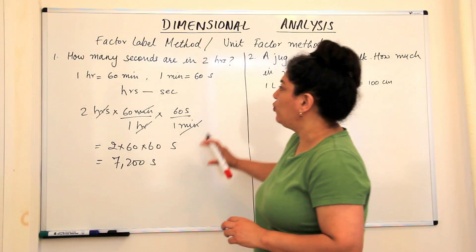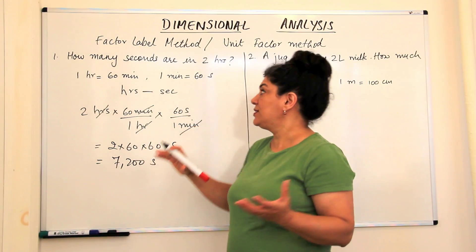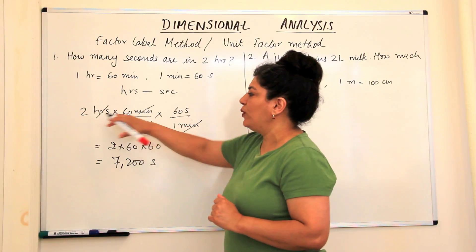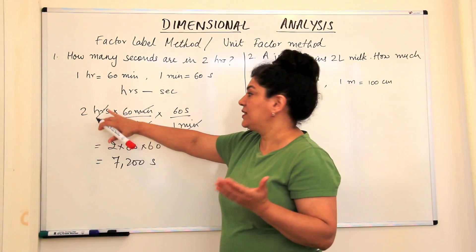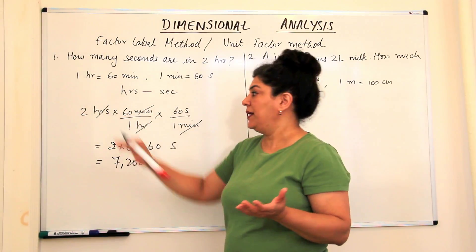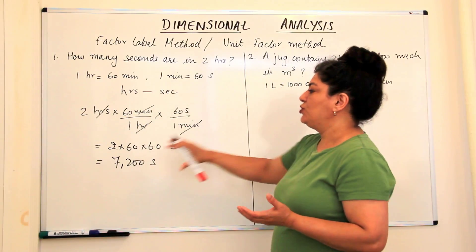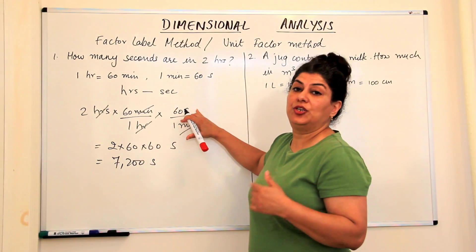Do you see? So what did we do? We use conversion factors in such a way that the previous unit gets cancelled out in the next step and we string them together to get the desired unit in the end.